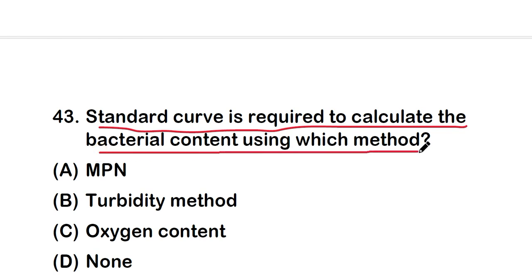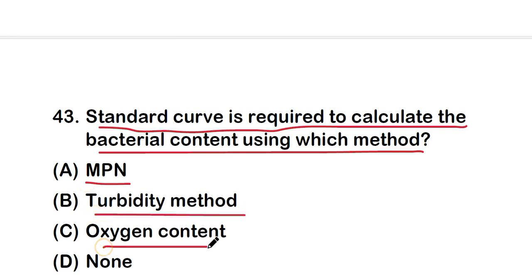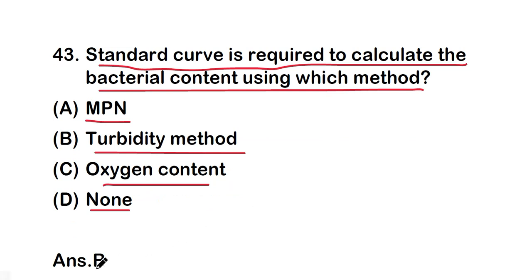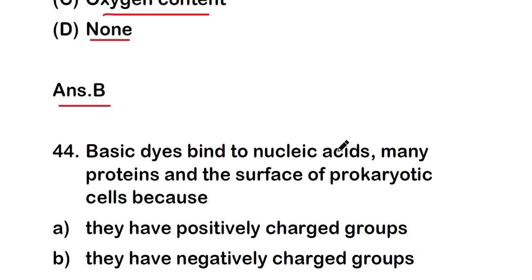So measuring the metabolic activity of a bacterial sample provides indirect count of the bacteria. Next question: a standard curve is required to calculate the bacterial content using which method? Options are: MPN, turbidity method, oxygen content, or none. The right answer is option B — turbidity method.